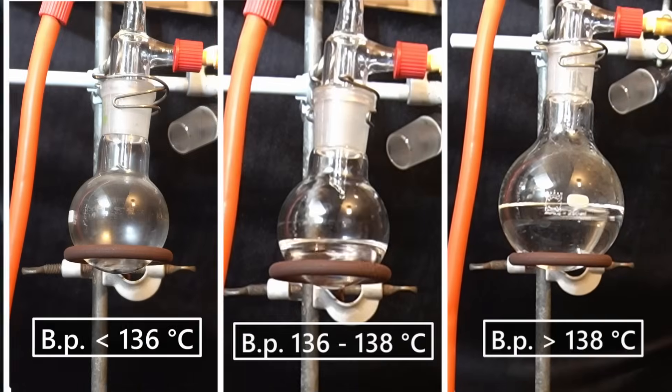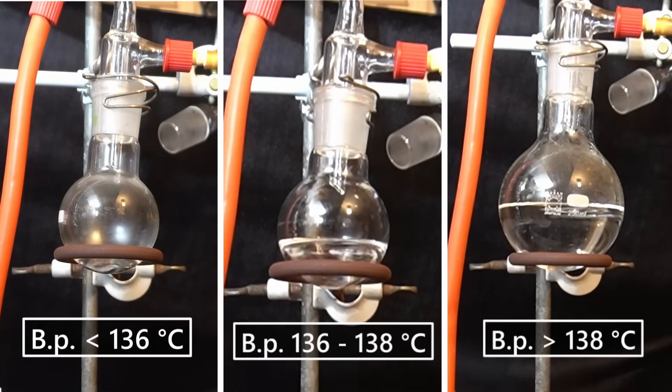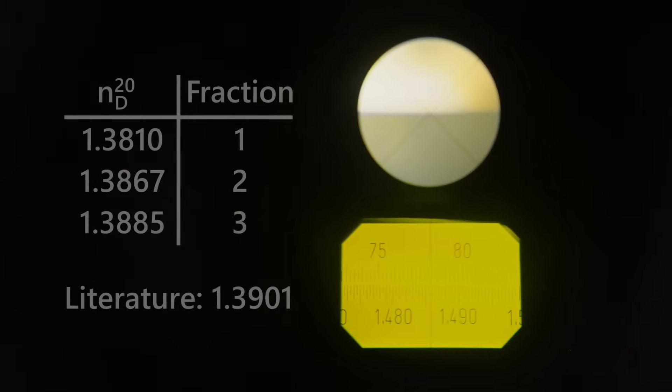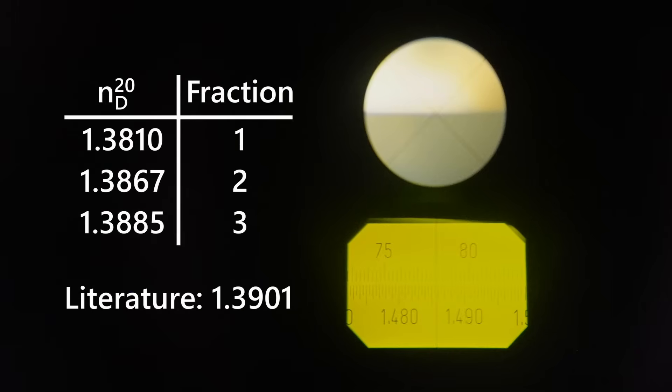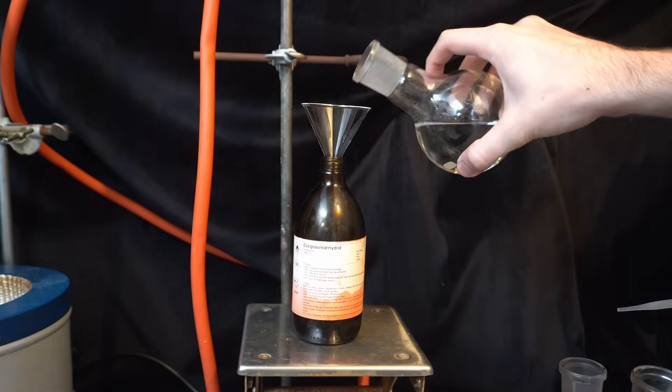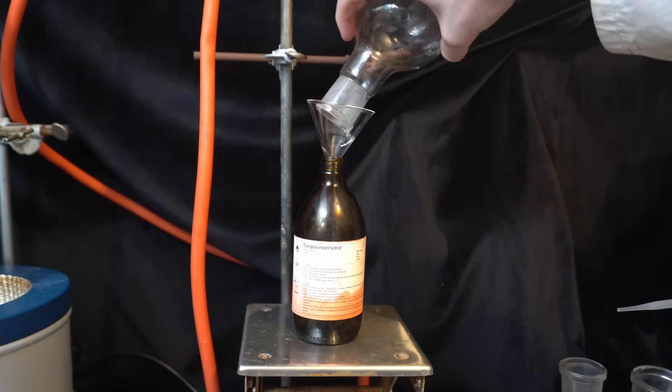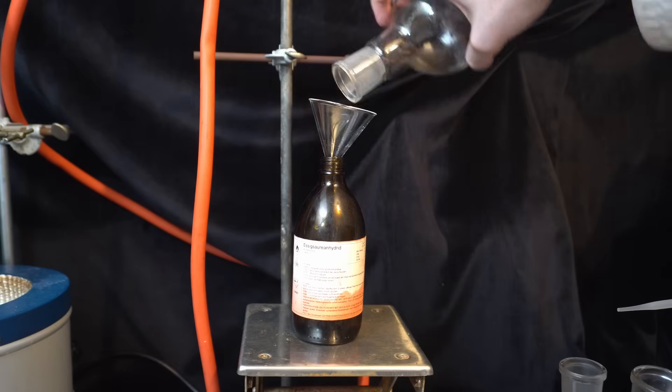Now we have a total of three fractions, and we can check their purity by measuring their refractive indices. The third fraction has a refractive index of 1.3885, which is only off by 0.0006 from the literature value. This is easily within the margin of error of this refractometer, so I can add this to my leftover anhydride from a previous run.